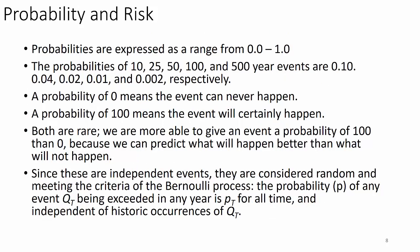Probabilities are expressed as a range from zero to one, or as percentages. The probabilities of 10-, 25-, 50-, 100-, and 500-year events are 0.1, 0.04, 0.02, 0.01, and 0.002 respectively. A probability of zero means the event can never happen — as a scientist, it's hard to conceptualize a true zero probability event; incredibly unlikely, yes, but zero is effectively an impossibility. A probability of 100% means the event will certainly happen — for instance, it will rain again on this planet in the next five years.